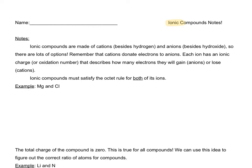Ionic compounds are formed with cations — cations are positive — and anions, which are negative. There are a couple of exceptions here. If the cation is hydrogen, that makes an acid, and if the anion is hydroxide, that makes a base. But any other combinations of cations and anions are ionic compounds. There are a lot of different ways to make ionic compounds because there are a lot of different cations and a lot of different anions.